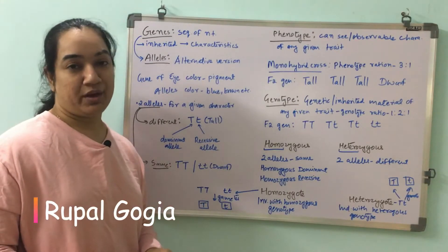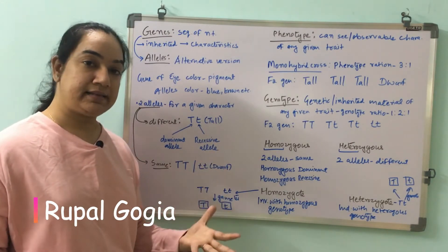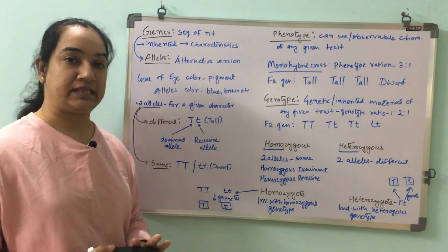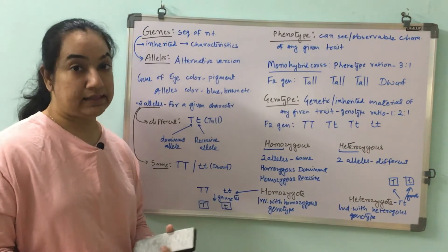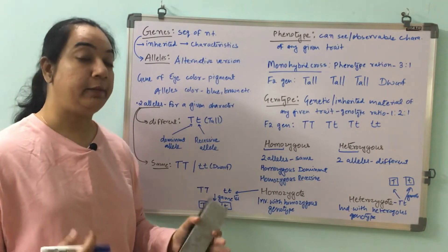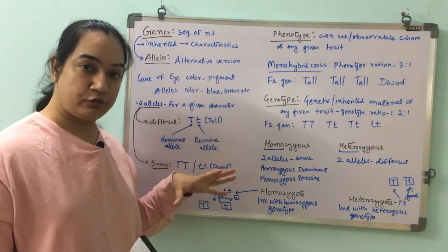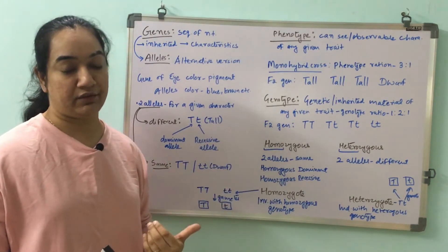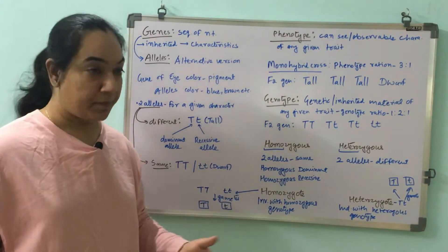Hello everyone and welcome back to Now I Know. Today we are going to talk about some of the genetics terms that we use frequently and that could be confusing sometimes. We have talked about genes and alleles in detail, homozygous, heterozygous and hemizygous also in detail. So here I'm going to give you a brief idea of all these terms, along with some more new terms that we frequently use.